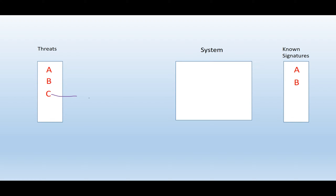If an attacker uses threat C, again the system will compare this with previously known signatures. C will be compared with A — they are different. C will be compared with B — they are different. So C will be able to successfully execute its malicious code. Again the system will realize that this is something bad and it will create a signature of this threat.